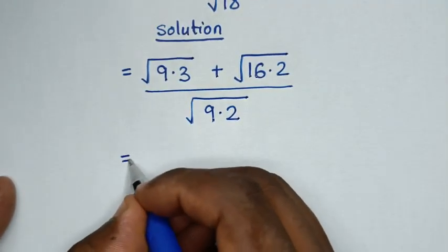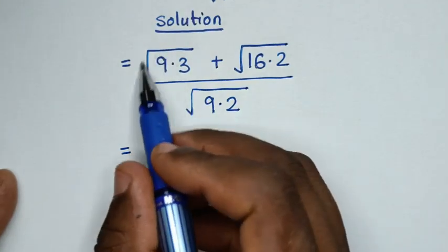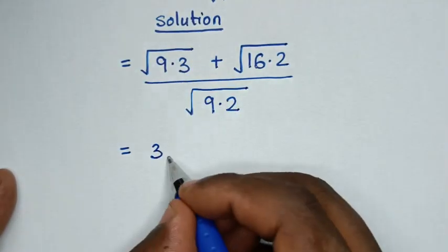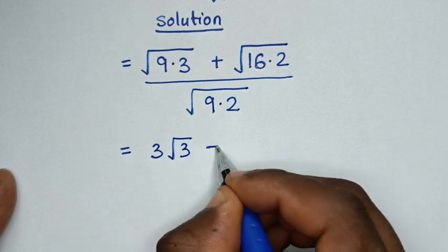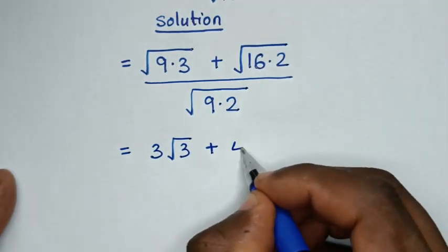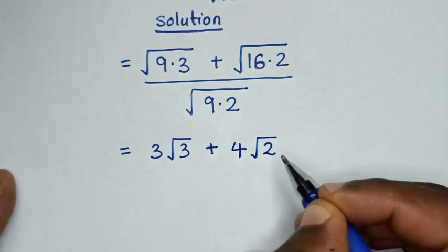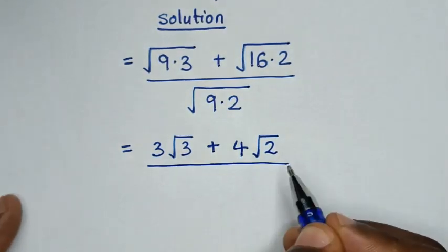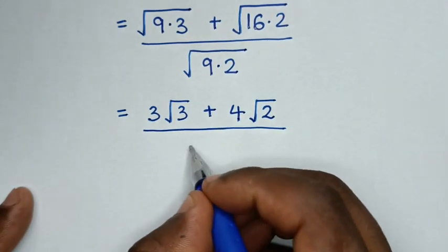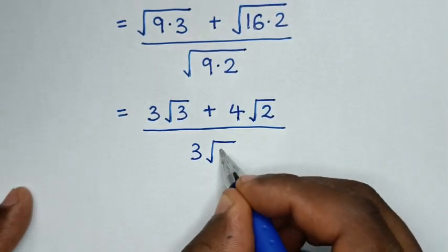Then it will be equal to: from here, square root of 9 is 3, so it will be 3 times square root of 3, plus square root of 16 is 4, so 4 times square root of 2. Then over square root of 9, which is 3, so it will be 3 times square root of 2.